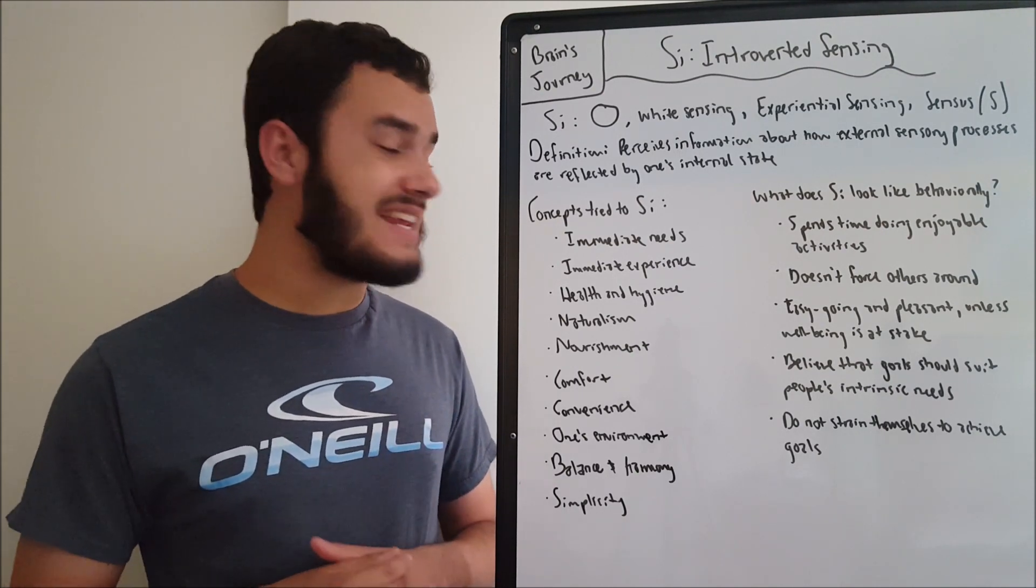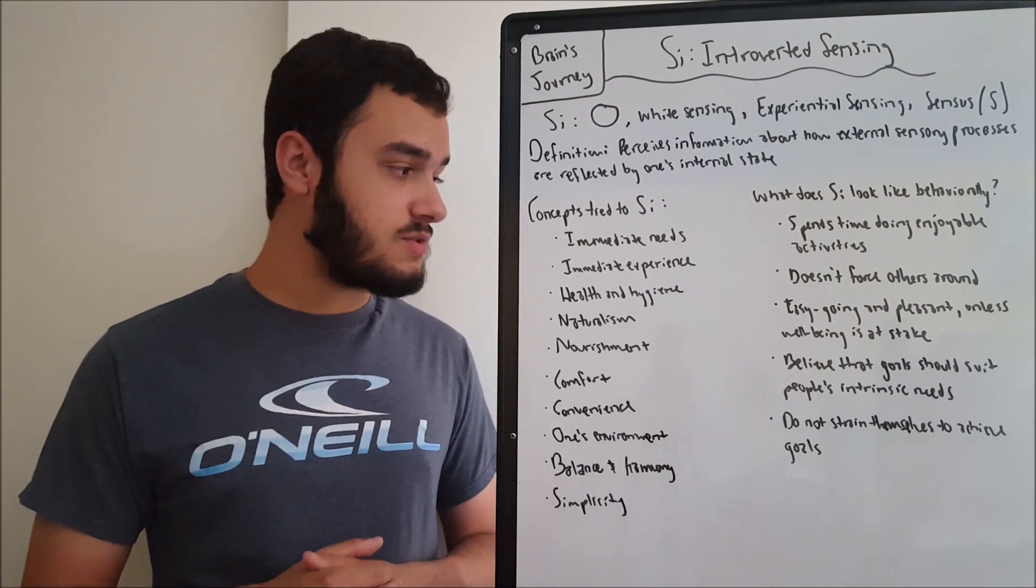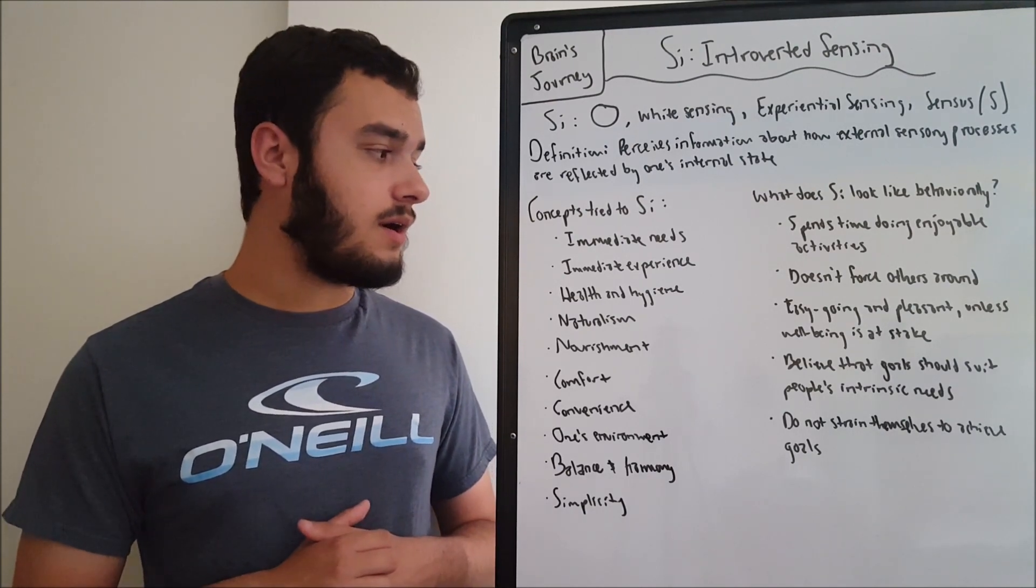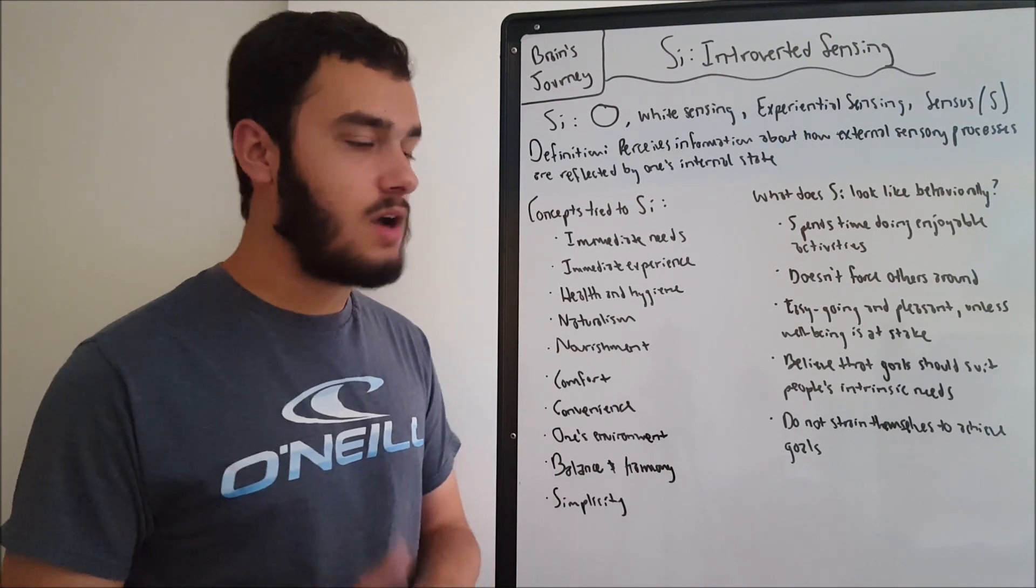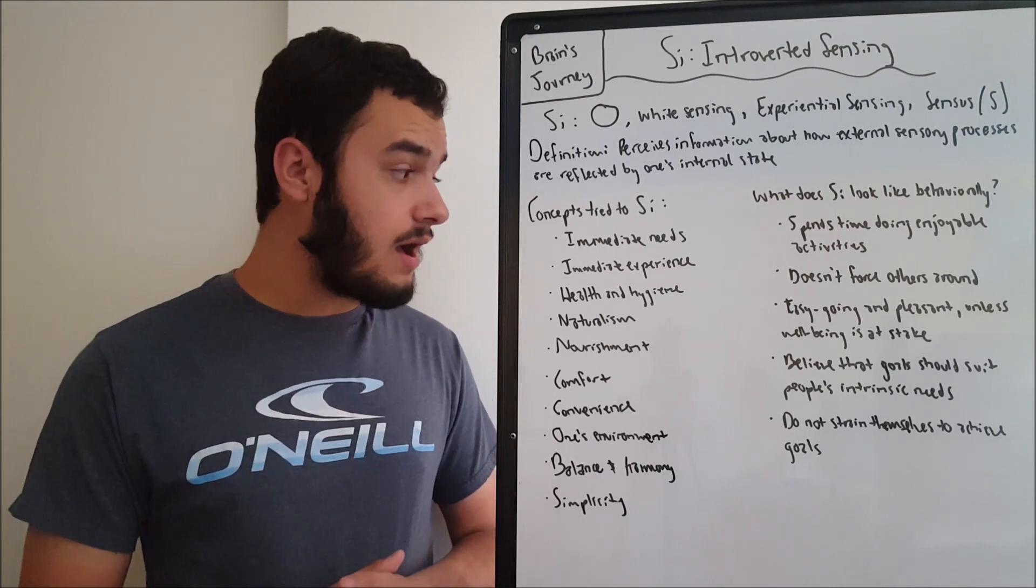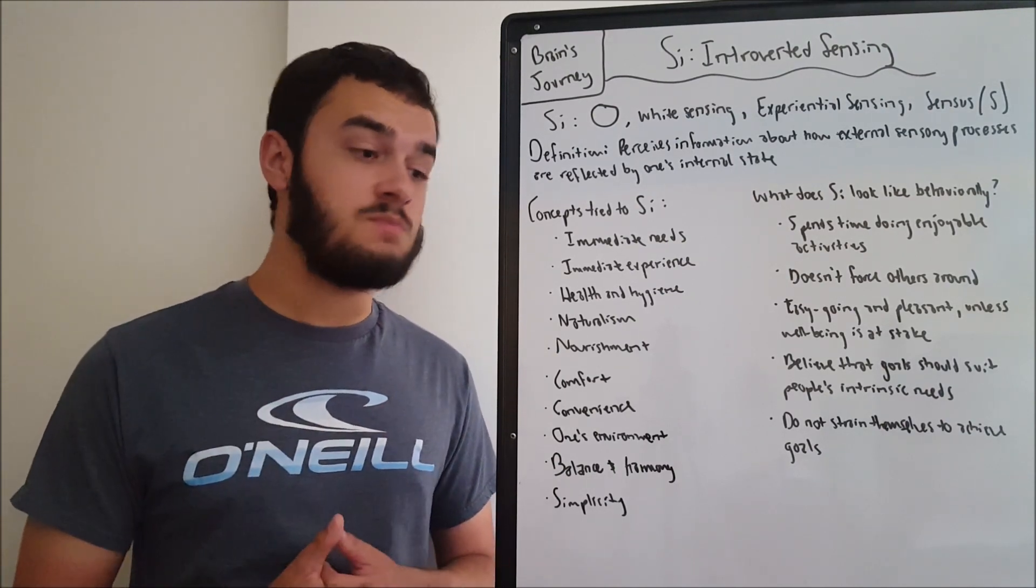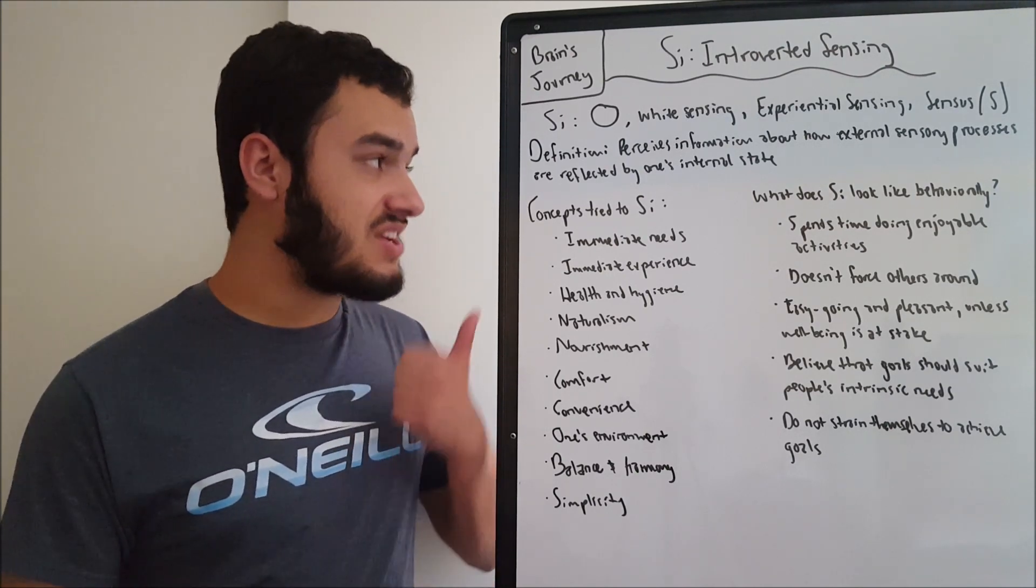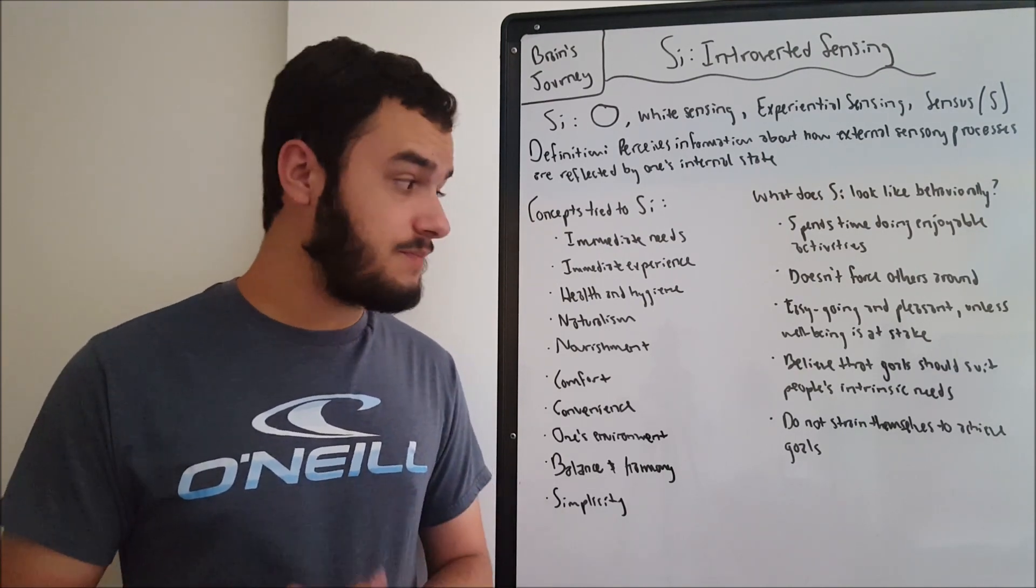Then we move to immediate experience. This is kind of related, is somebody's senses, somebody's sense-related experiences, maybe taste, maybe touch, maybe sight. People are concentrated on how they're experiencing things in the moment. That's in contrast to the MBTI definition. If you'll remember, these are socionics definitions. We're learning socionics here.